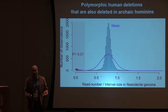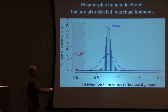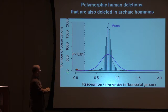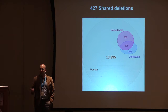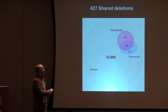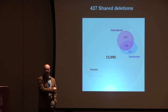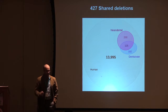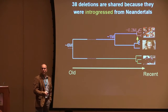We developed a relatively straightforward bioinformatic pipeline to do this systematically rather than going through thousands of polymorphisms one by one. We look at average read depth: regions where Neanderthals and Denisovans show very few reads indicate a deletion. Of the 14,000-plus deletion polymorphisms in humans that we tested, we found about 427 shared deletions. We did extensive validation and are very confident in these, though we are probably missing many more.